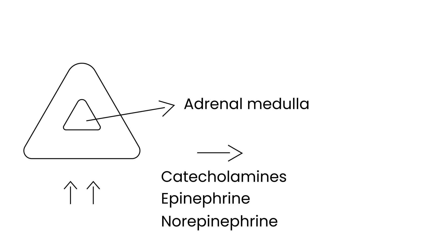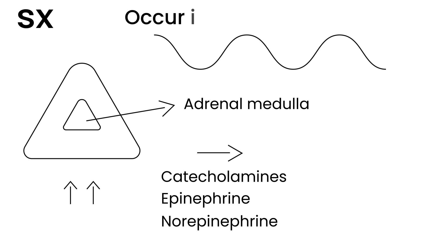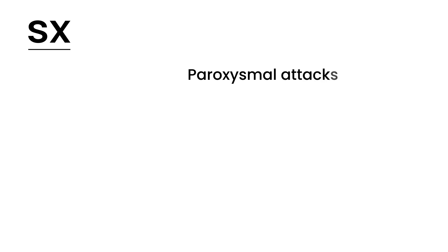These catecholamines can cause some very dramatic symptoms. The tumor tends to release them episodically, so the symptoms occur episodically or in paroxysms. This is a very key word to remember on licensing exams. You have a typical scenario of a patient that has paroxysmal attacks — they come and go. During these attacks, the first thing is headache.